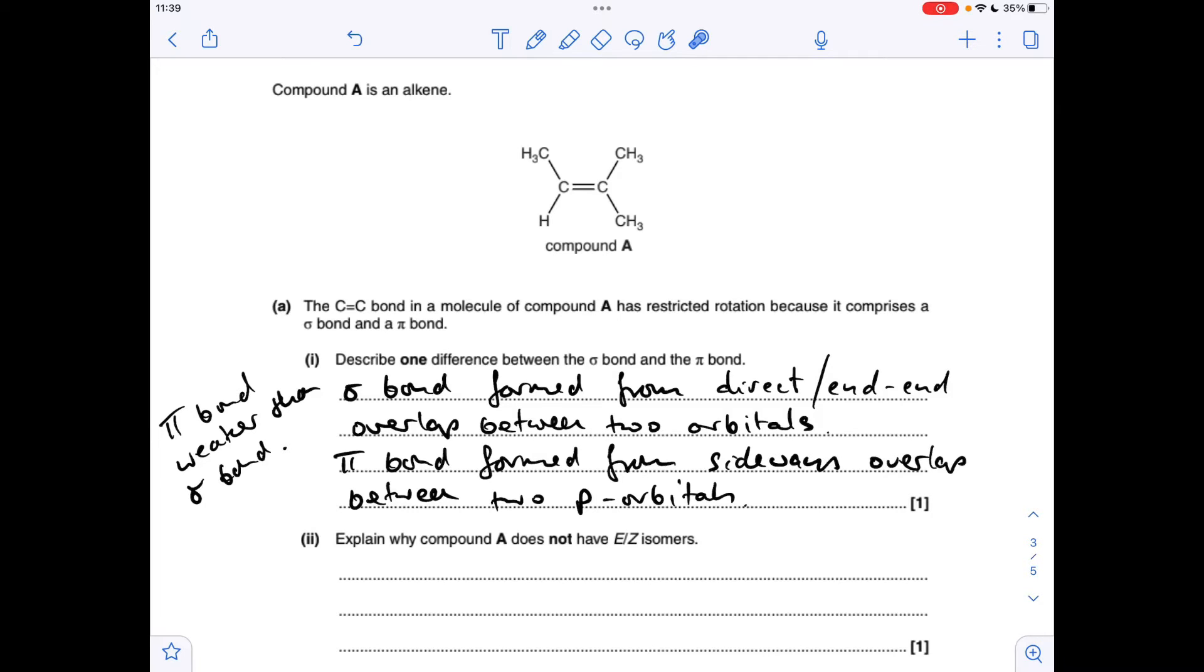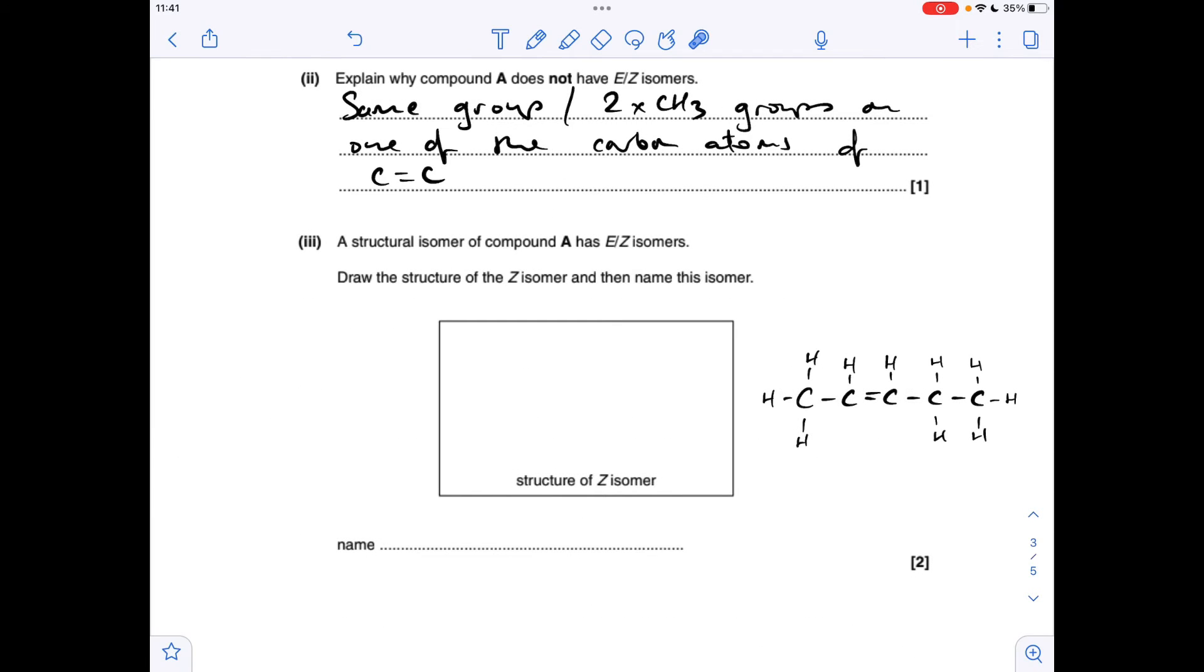And the next part, why does compound A not have EZ isomers? Well, for EZ isomerism to be possible, you've obviously got to have a C=C double bond, which we've got, but on each carbon of the double bond you've got to have different atoms or groups of atoms attached. So the left-hand carbon, yeah, we've got different atoms or groups of atoms attached, CH3 and H, but on the right-hand carbon you've got two identical groups, you've got two CH3 groups. Because of that, we can't have this EZ isomerism.